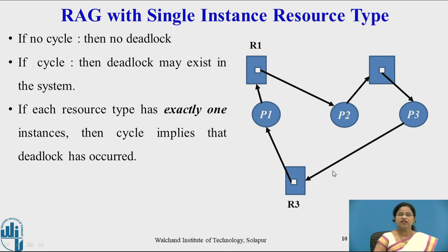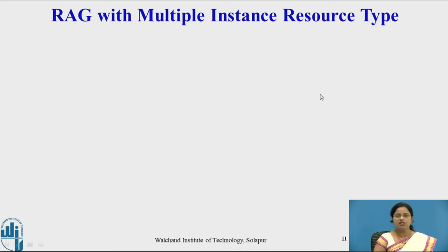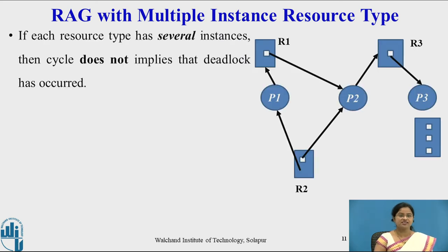For a single instance, if there is a cycle — for example from P1 to P2, P2 to P3, and again P3 to P1 — then deadlock has surely occurred. For single instance resources, a cycle is a necessary and sufficient condition for the existence of deadlock. However, if we have multiple instances of a resource type and a cycle exists, it does not necessarily imply that deadlock has occurred.